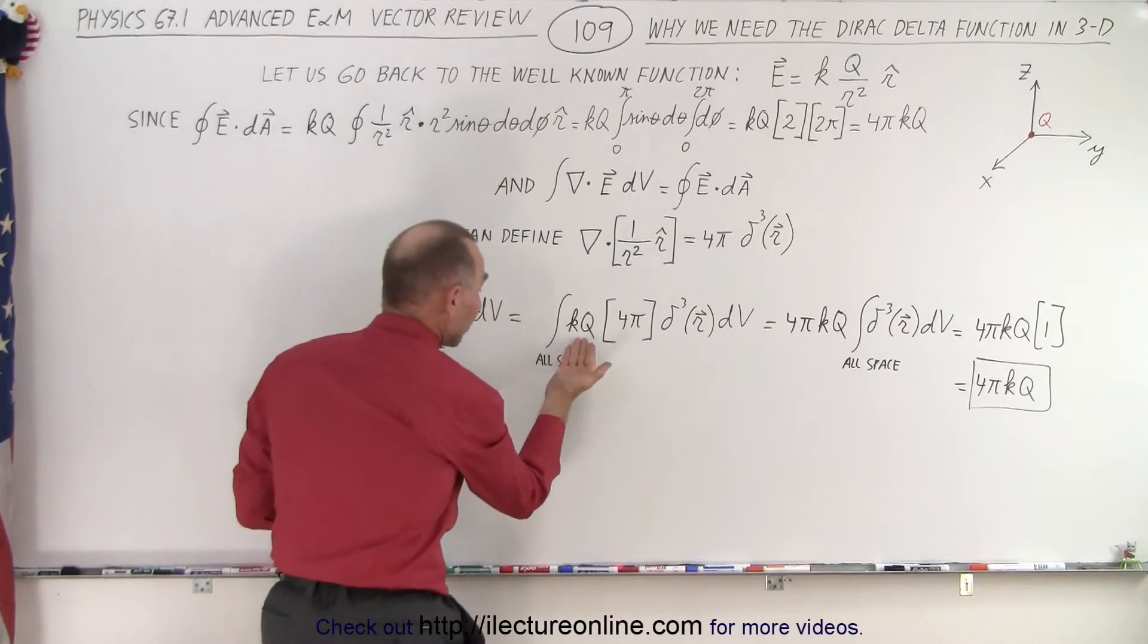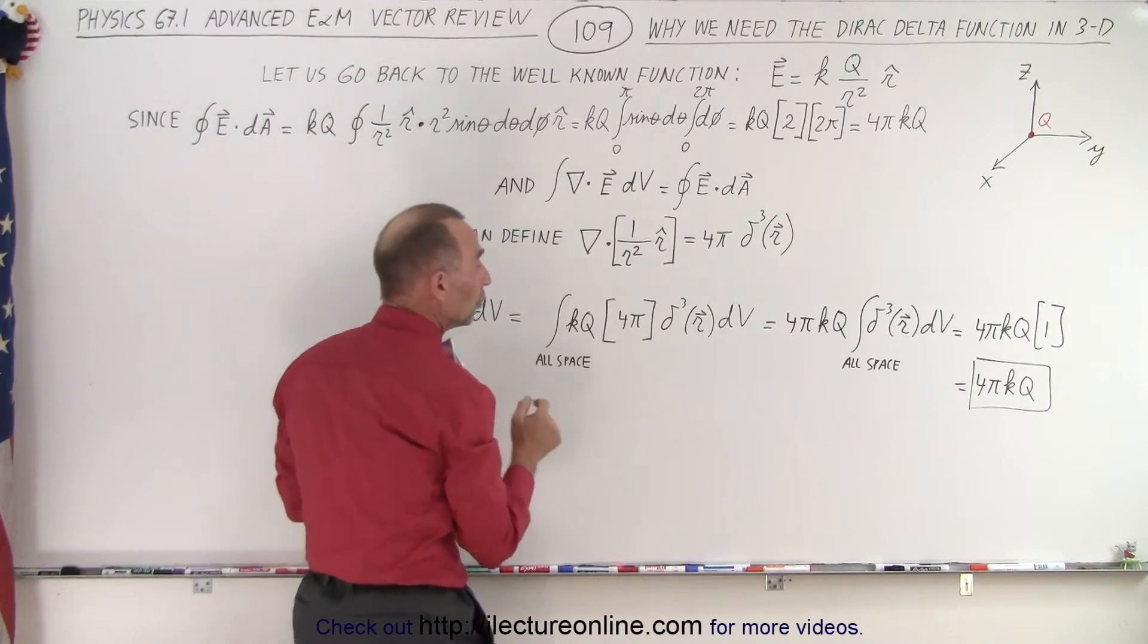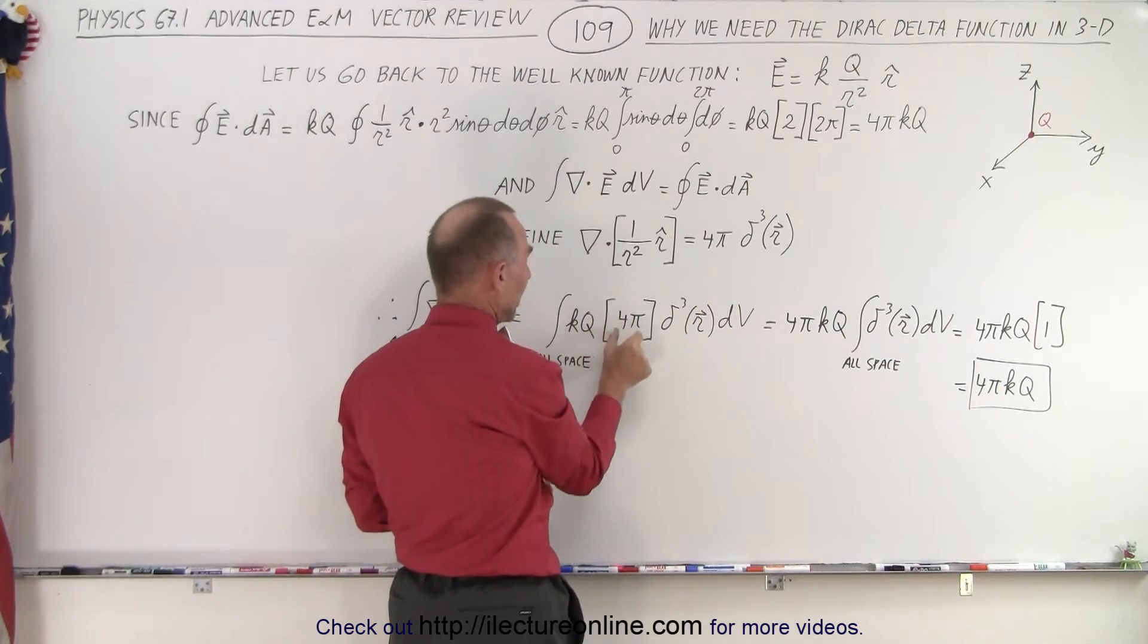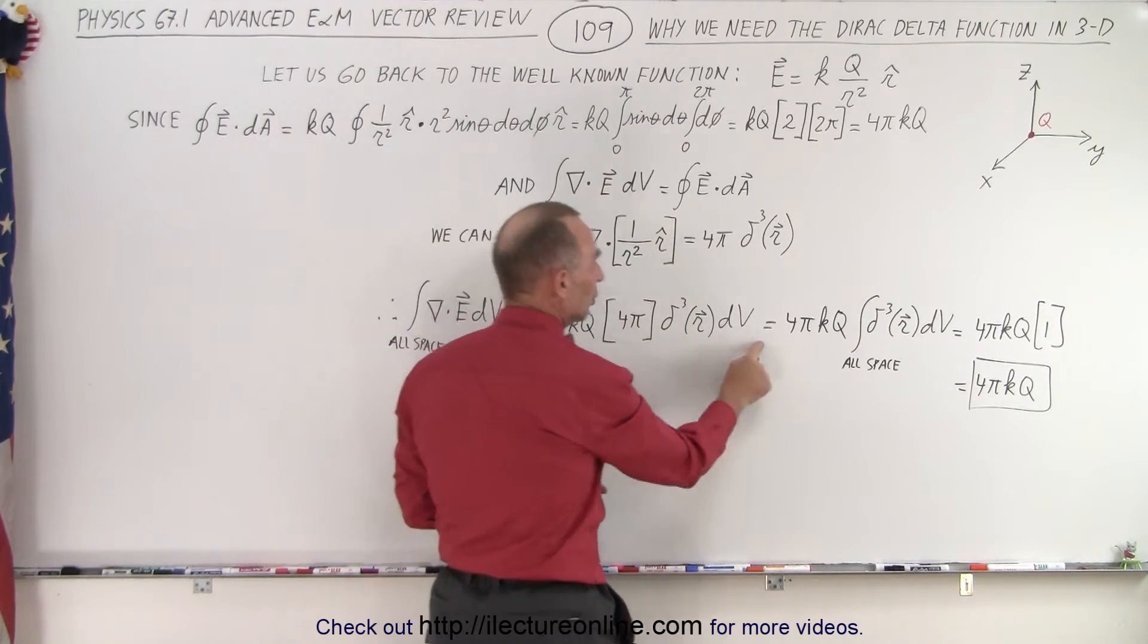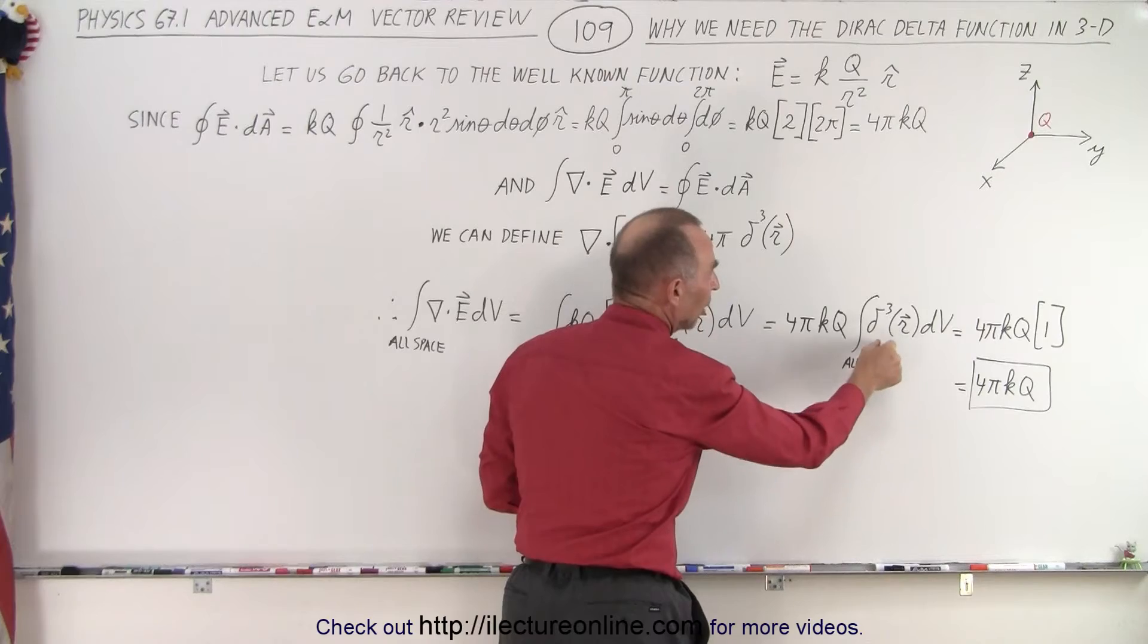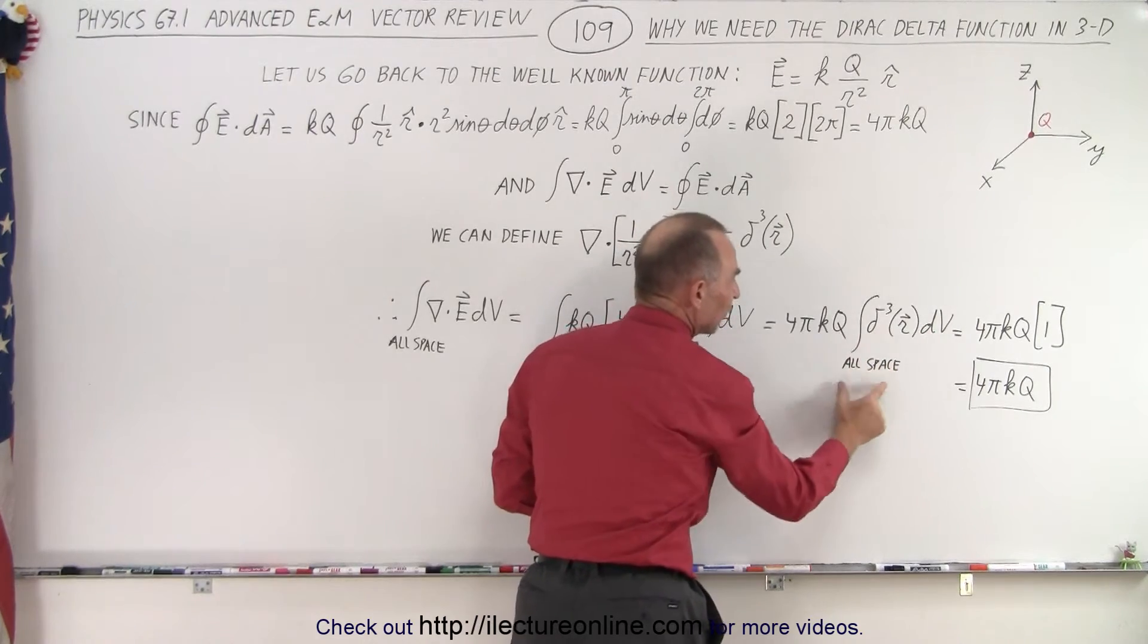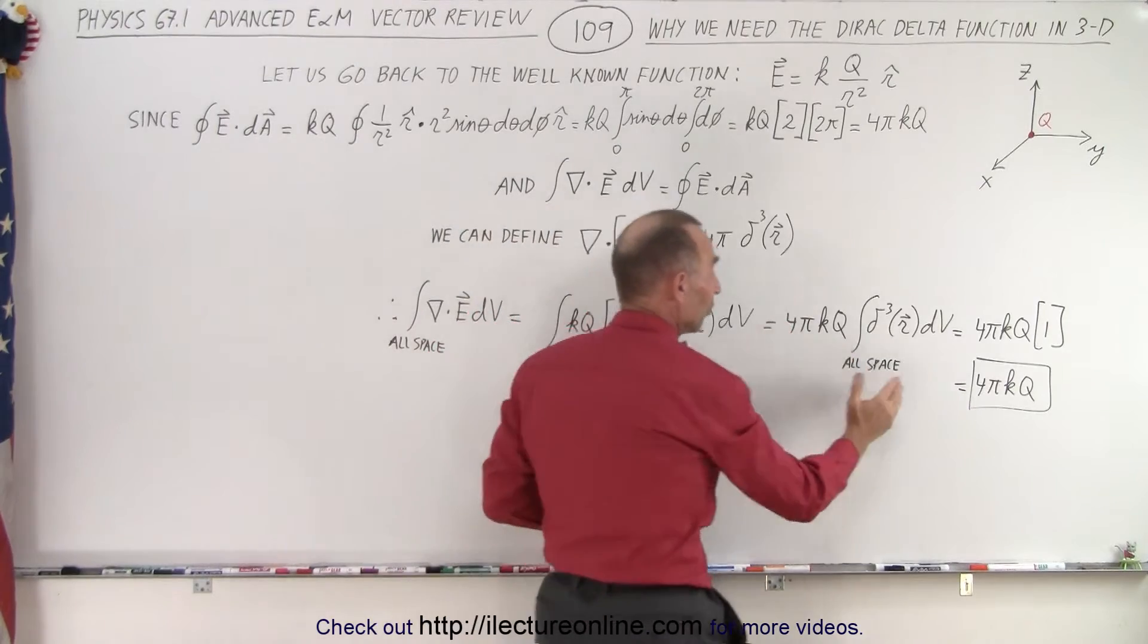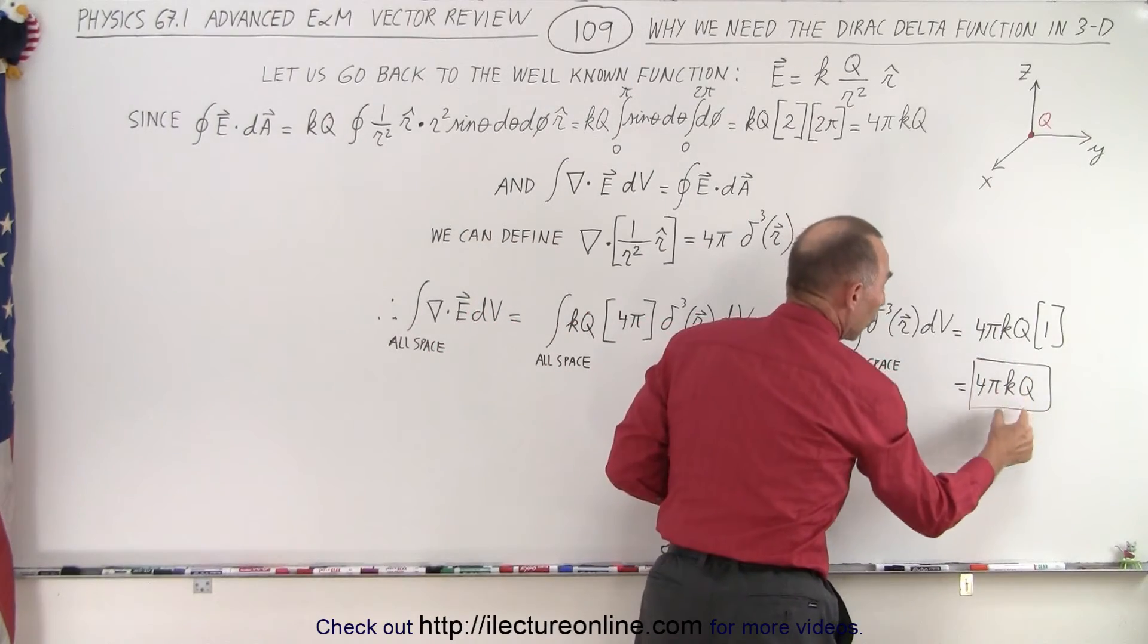Now we take the integral of the Dirac delta function dV of all of space, and remember that what that was equal to—that was equal to 1. So we have 1 times this, or this.